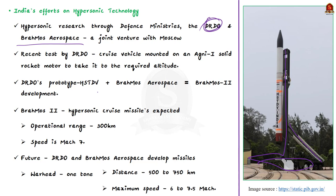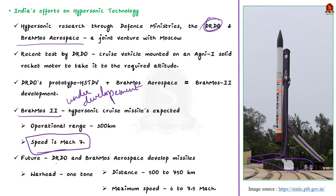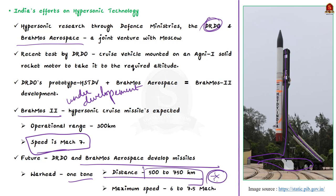BrahMos Aerospace is developing the BrahMos-2, a hypersonic cruise missile currently under development with an expected operational range of 300 km and speed of Mach 7. For the future, DRDO and BrahMos Aerospace are developing missiles that can carry a warhead of around 110 kg to a distance of 500–750 km, expected to travel at a maximum speed of Mach 6 to 7.5.